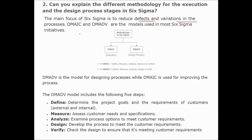The two key models are DMAIC and DMADV. DMAIC stands for Define, Measure, Analyze, Improve, and Control. DMADV stands for Define, Measure, Analyze, Design, and Verify. These are the models used in most Six Sigma activities. DMADV is the model for designing a process, while DMAIC is used for improving an existing process.